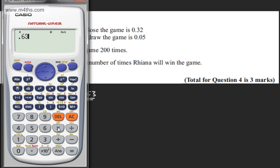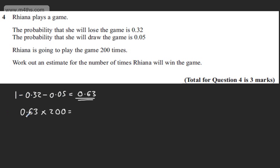So 0.63 times by 200 is going to give us 126. So we can write in 126 games. So that's my final answer. I've shown the value that I need. The probability of a win is 0.63. 0.63 multiplied by 200 gives me 126.